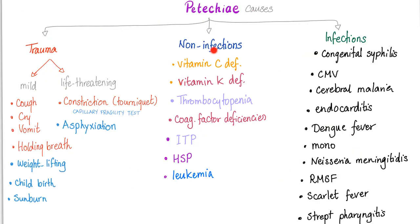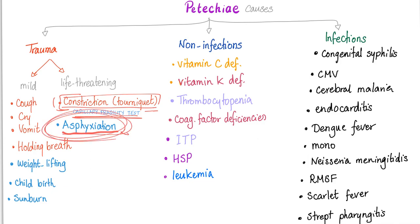Causes of petechiae: trauma, non-infectious, and infectious. Trauma could be mild, like coughing — coughing a lot can rupture tiny capillaries, leading to subcutaneous hematoma and hemoglobin coloration. Same thing with crying, vomiting, holding your breath, weight lifting — all can rupture some capillaries. Also childbirth and sunburn. Or it could be life-threatening, such as constriction by a tourniquet — and there is a test called the capillary fragility test. And asphyxiation and strangulation are also life-threatening causes.